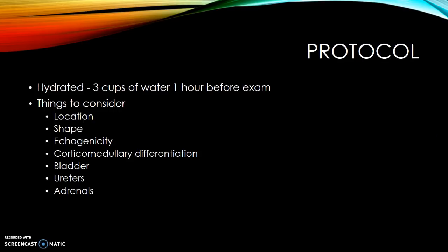For the protocol, prepare the patient by having them drink at least three cups of water at least one hour before the exam so they are well hydrated and the bladder is full. When scanning, consider: location — are the kidneys in the retroperitoneal space? Shape — do they have a reniform shape? Echogenicity — less than the liver? Corticomedullary differentiation — medium cortical echoes with hypoechoic medullary pyramids? For the bladder, check wall thickness, stones, debris, ureteral jets, ureteroceles. Note that adrenals are hard to see in adults unless there's a tumor, but easy to see in newborns.